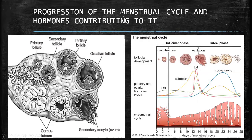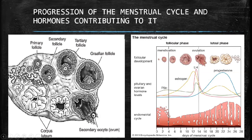The follicle grows and becomes a secondary follicle, then a tertiary follicle, until it becomes a fully matured, completely developed follicle called the graafian follicle. As it grows bigger, more and more estrogen is produced, and the endometrium becomes thicker and thicker, preparing it for pregnancy. After the graafian follicle has been formed, a process called ovulation takes place. Ovulation is the release of an egg cell from the graafian follicle in the ovary into the fallopian tube. This happens during the 14th day of the menstrual cycle.